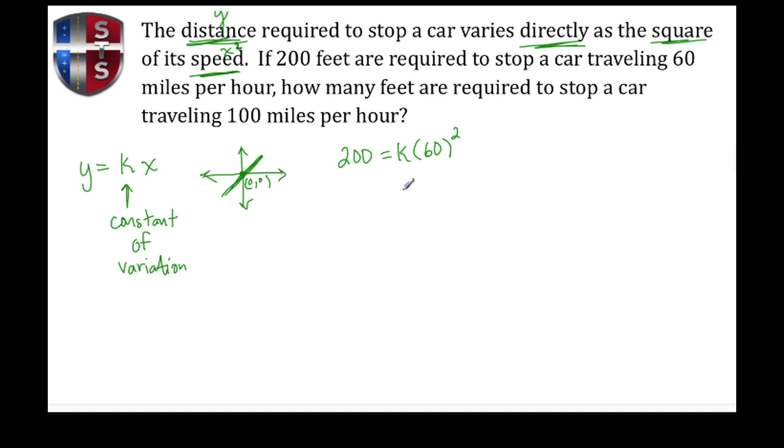We begin by always falling back to the order of operations, so we do our exponents first. 60 squared is actually 3,600. Now we go ahead and divide both sides by 3,600. Doing so, we now see these cancel and we have to simplify k. We start off with 200 over 3,600. These zeros go away just by dividing by 100.